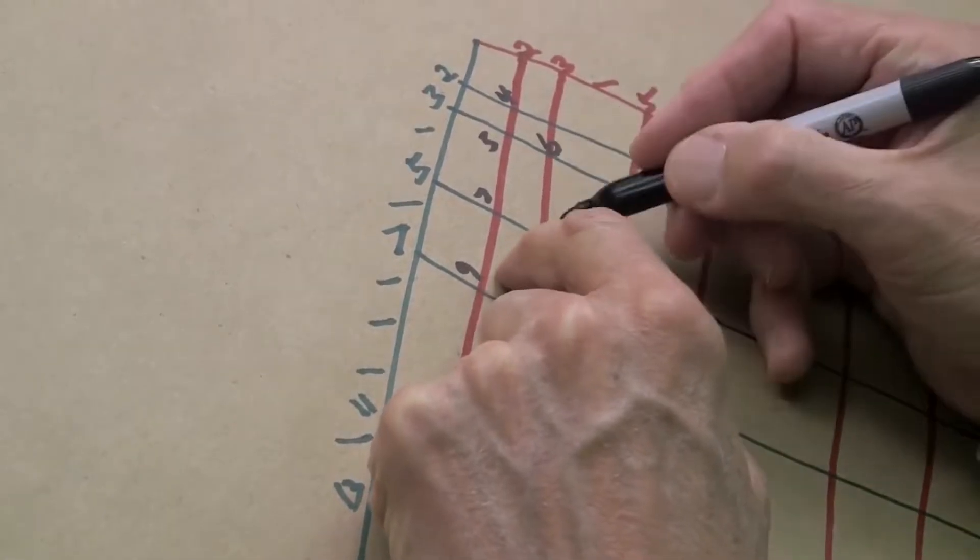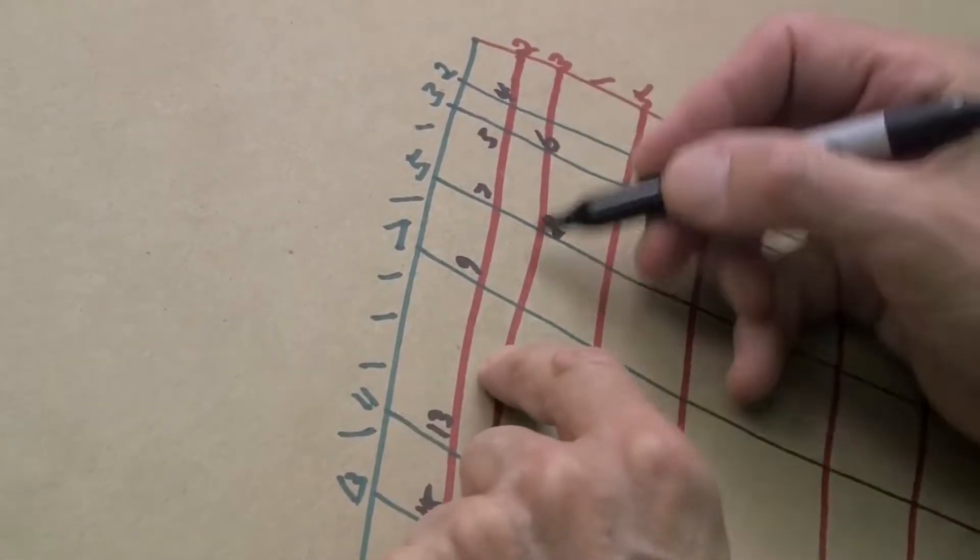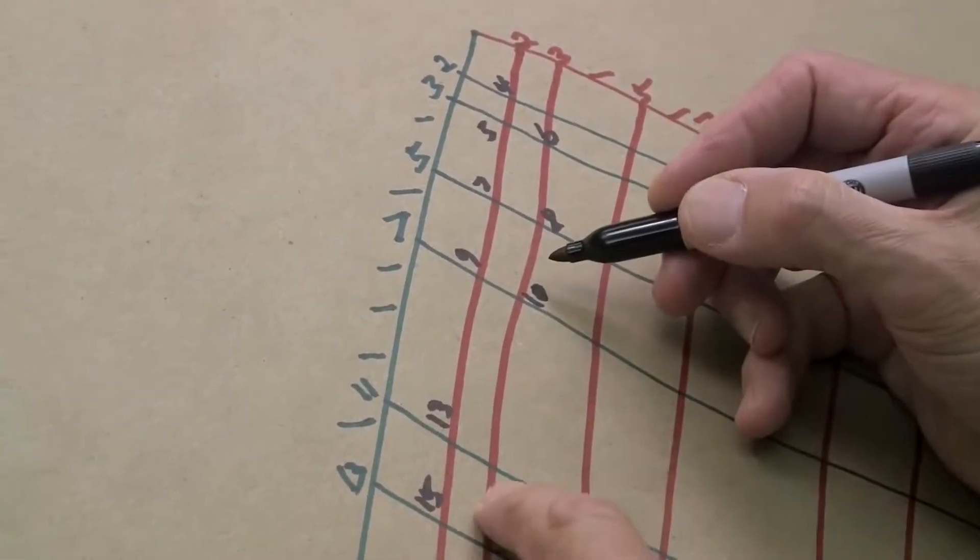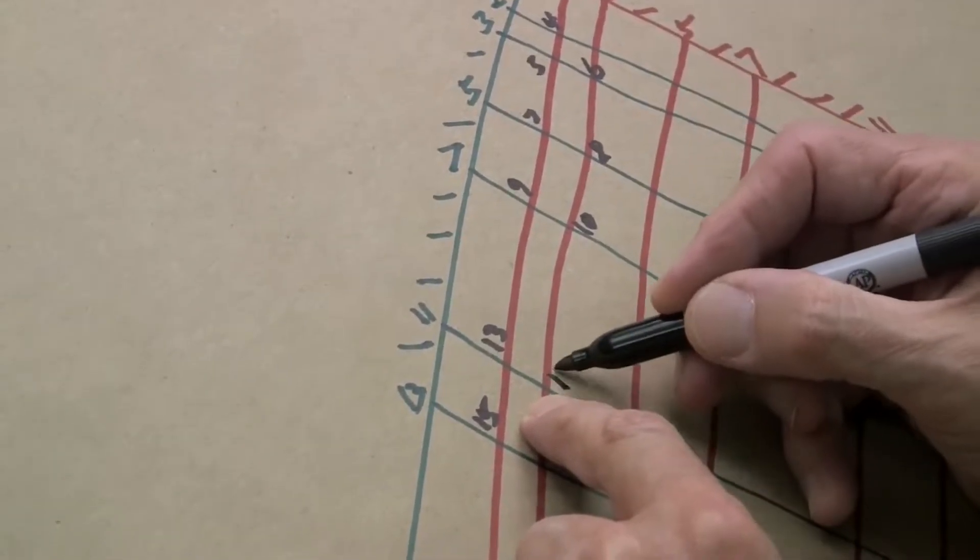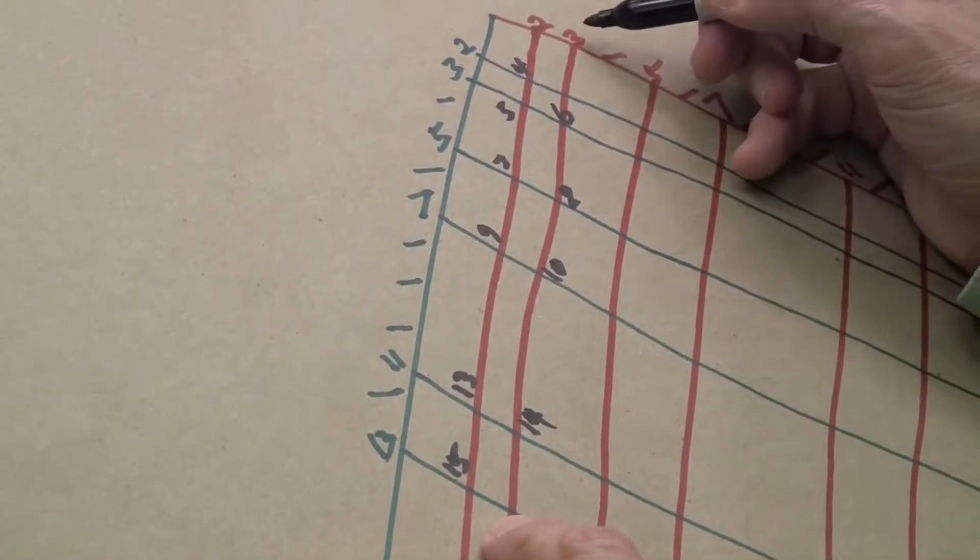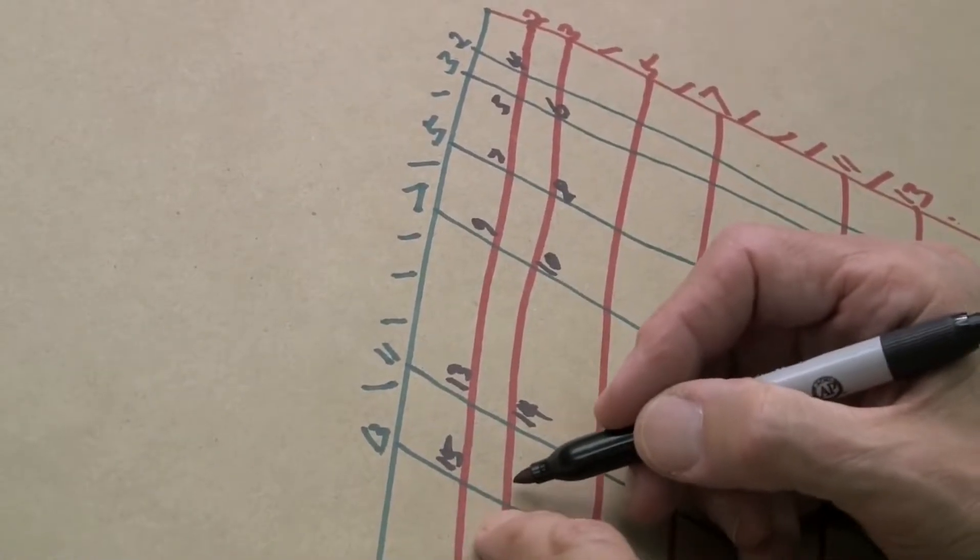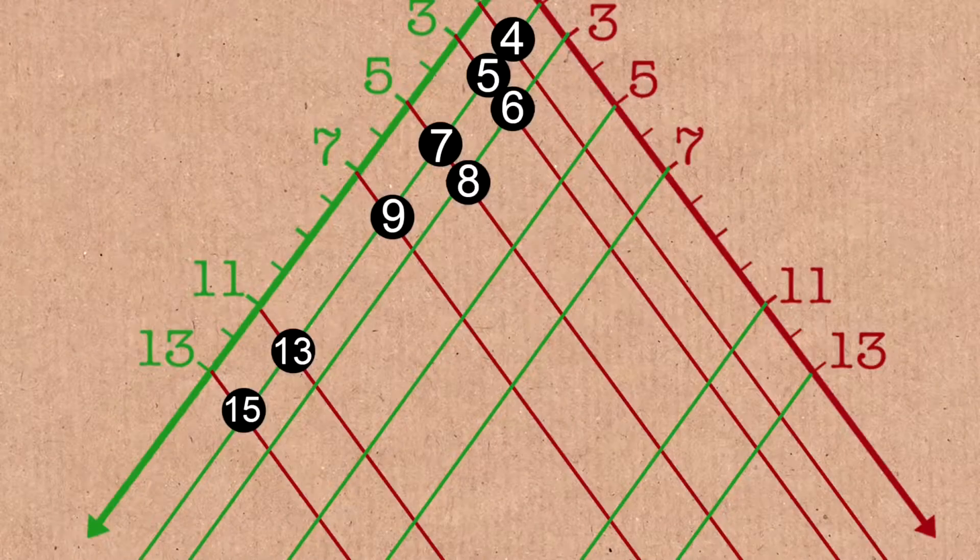We have five plus three is eight, and seven plus three is ten, and eleven plus three is fourteen, that's a bit of a skip, you might be worried about that one. And thirteen plus three is sixteen. You mean because we've skipped twelve?